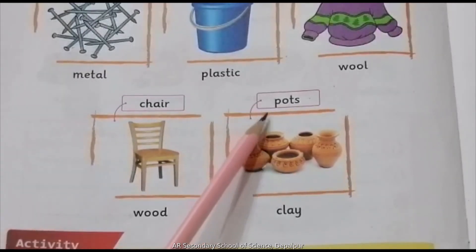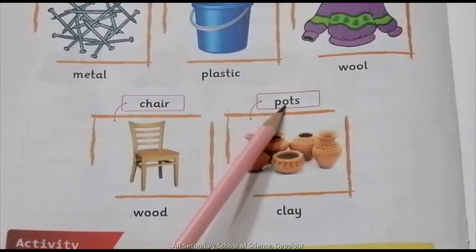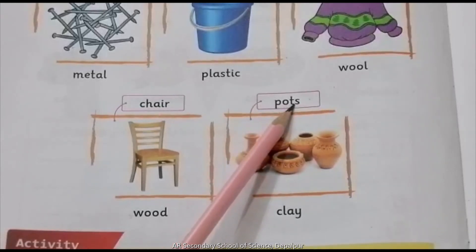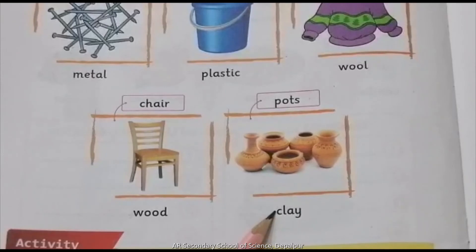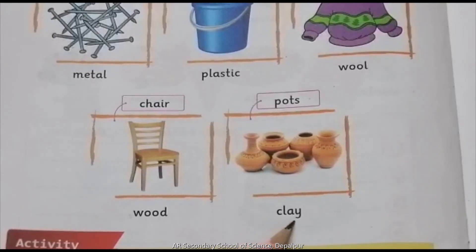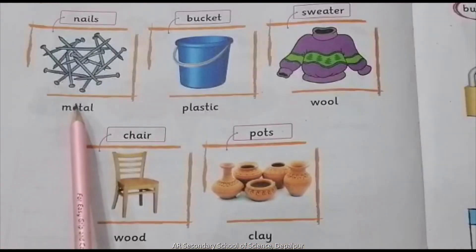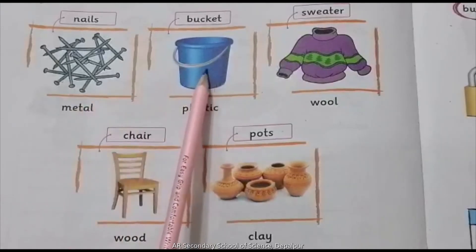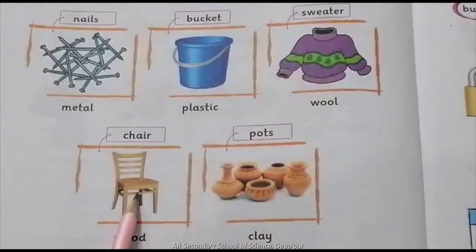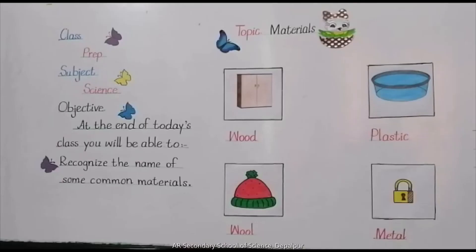Look here — wow, these are pots — P-O-T-S, pots. These are made of clay. Ye mitti ke bane hain — C-L-A-Y, clay. These are the materials we use in daily life: metal, plastic, wool, wood, clay. Aaj humne different materials ke baare mein parha.